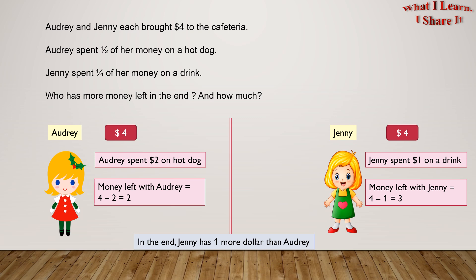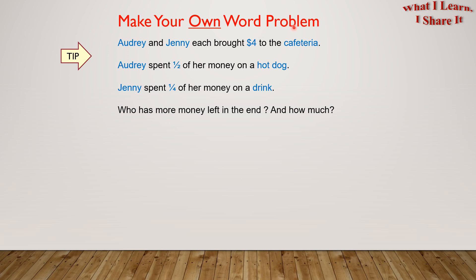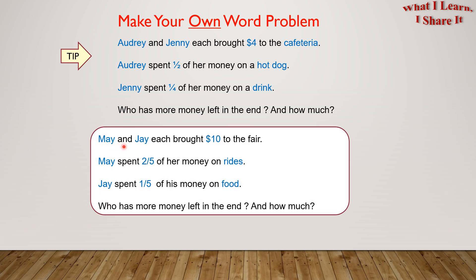We solved the problem! Coming up is the fun part, and that is: Make your own word problem. Here's a tip — you can use the same word problem and change the numbers and objects to make your own word problem. Here's an example: May and Jay each brought ten dollars to the fair. May spent two-fifths of her money on rides. Jay spent one-fifth of his money on food. Who has more money left in the end? And how much? It's so easy to make your own word problems, right?